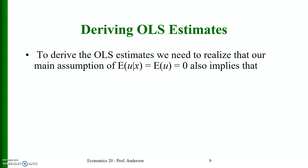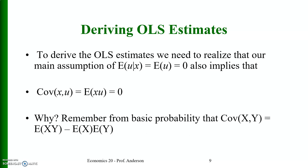To derive the OLS estimates, we note that our main assumption E[u | x] = 0 also implies that the covariance between x and u is equal to zero. Recall from basic probability that Cov(x, u) = E[xu] - E[x] * E[u].